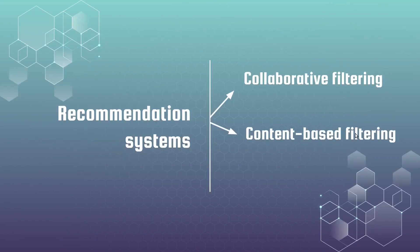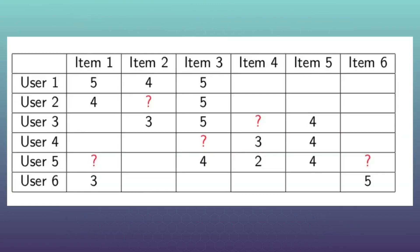Generally, all recommendation systems can be divided into two big groups: collaborative filtering and content-based filtering. While searching information about recommendation systems, you will probably meet a rather popular table example with users and movie items. Let's use it also — let's fix our conversation to that users-movies example.